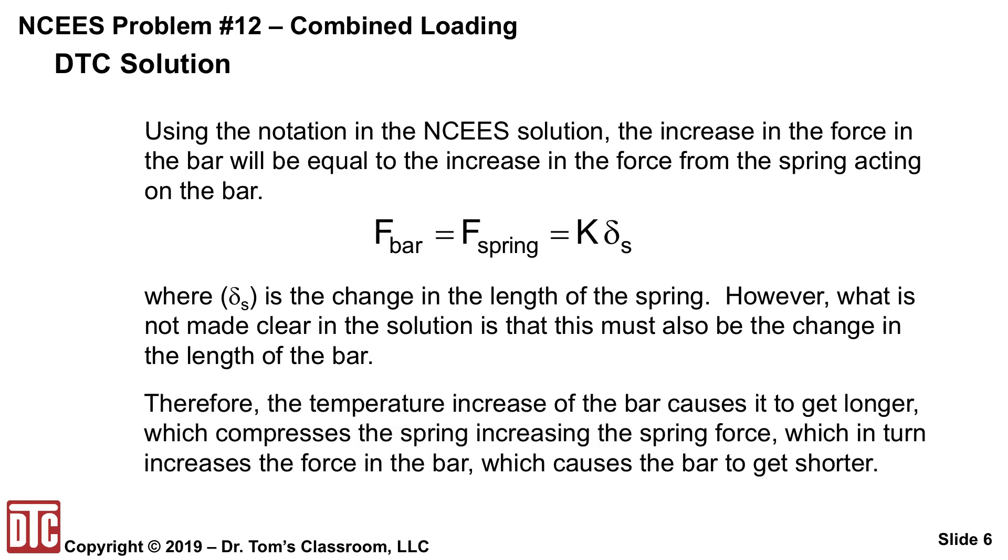Therefore, what happens is the temperature increase of the bar causes it to get longer, which compresses the spring, increasing the spring force, which in turn increases the force on the bar, which causes the bar to get shorter. You want me to say that one again? Yeah, the temperature makes the bar get longer. That compresses the spring. That increases the force back onto the bar, which then causes it to get shorter than it would if it was free to just under the 300 degrees F. That's the piece that's kind of missing. It took a while to come to that, but that's where this heads.